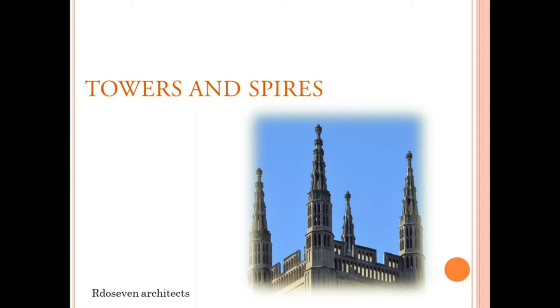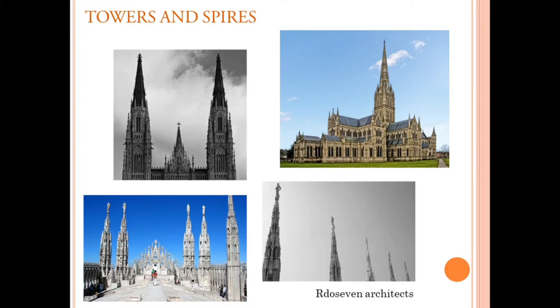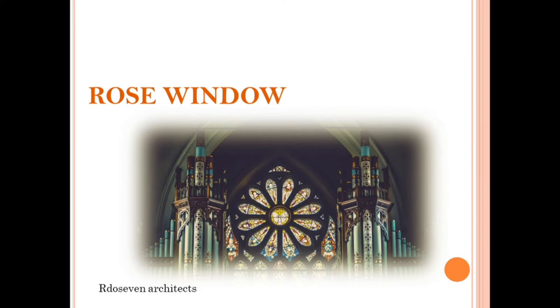Towers and spires played an important role as a feature of Gothic buildings. The tower is usually the last part of the structure to be built, and construction usually took many years, making it extremely expensive. In the later period of Gothic architecture, a needle-like spire was often added to the tower, giving it much greater height. The variation of the spire was a slender, spear-like form usually placed on the transept where it crossed the nave.